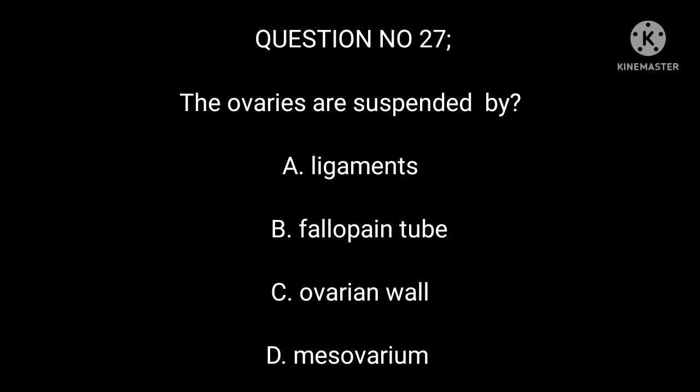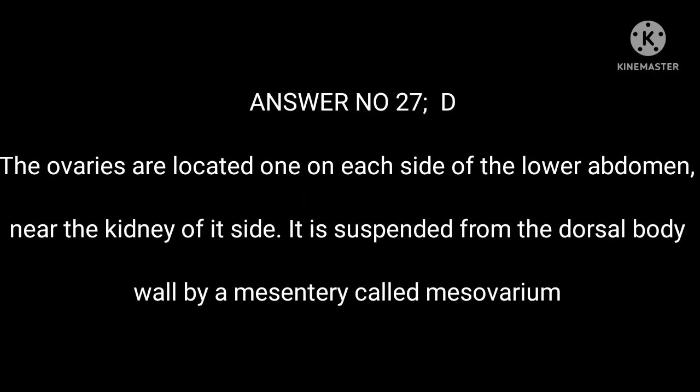Question number 27. The ovaries are suspended by: A. Ligaments. B. Fallopian tube. C. Ovarian wall. D. Mesovarium. Answer number 27: D. The ovaries are located one on each side of the lower abdomen. Each ovary is suspended from the dorsal body wall by a mesentery called the mesovarium.